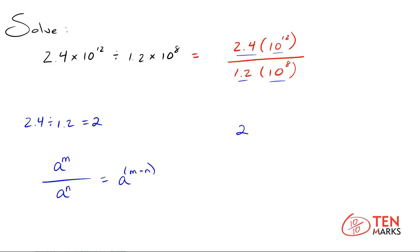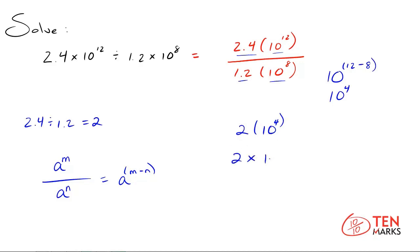Apply this property to the powers of 10: keep the base of 10 and subtract the exponents — 12 minus 8 — giving you 10 to the 4. So when you divide these two numbers in scientific notation, you get 2 times 10 to the 4.